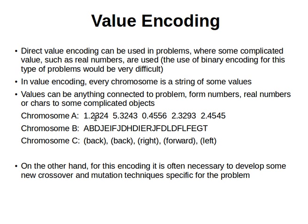Looking at these examples: chromosome A has values like 1.3, 2.2, 3.2, 4, 5.3, and so on. A chromosome can also look like consecutive characters, or it can describe movement — for example: move back, move back, right, forward, move left — something like that.